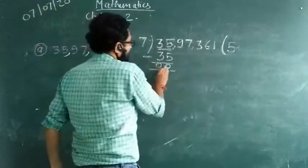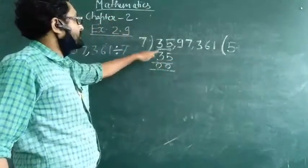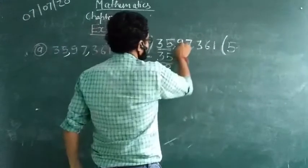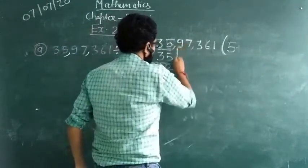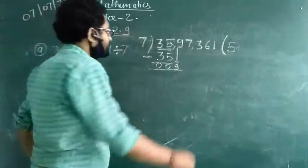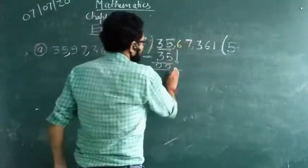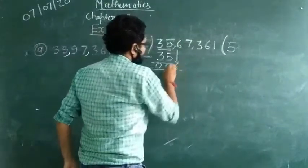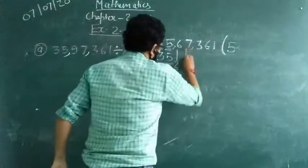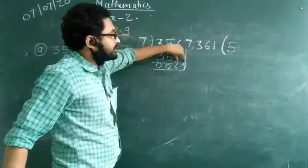Now this value will become the new dividend. But it is 0, which is smaller than 7, so we can't divide. We will take the next digit, which is 9. Now 9 is greater than 7. But wait — if the remainder is 0 and we bring down the next digit 9, we get 09. Since 6 is still smaller than 7, we will take the next value also. When we take 2 values simultaneously, we put 0 in the quotient first.